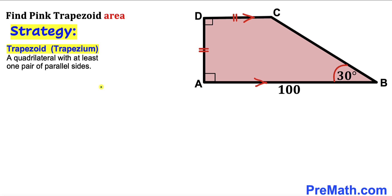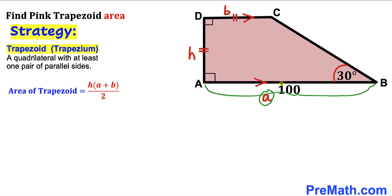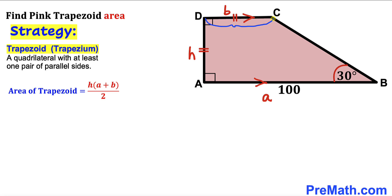Let's get started. Let's recall the definition of a trapezoid — a quadrilateral with at least one pair of parallel sides. As you can see, this side AB is parallel to this side CD. Now let's recall the area of a trapezoid formula: area equals height H times (A plus B) all over 2. This base AB, represented by lowercase a, is 100 units. However, base B and height H are both unknown, so our task is to calculate the height and base CD.